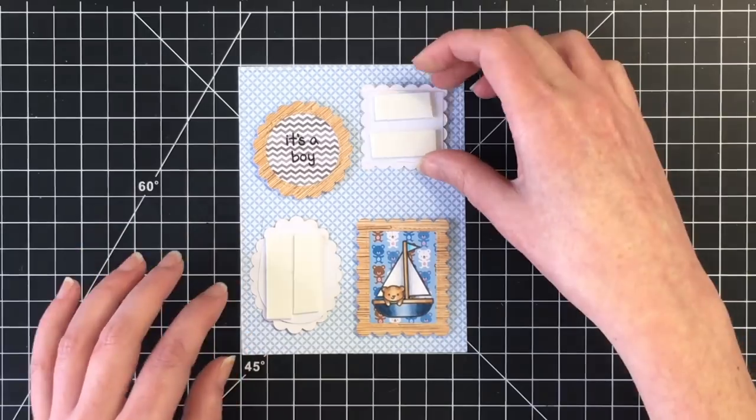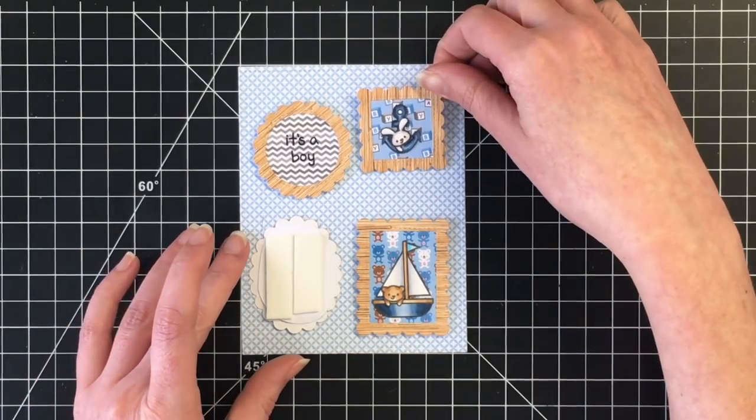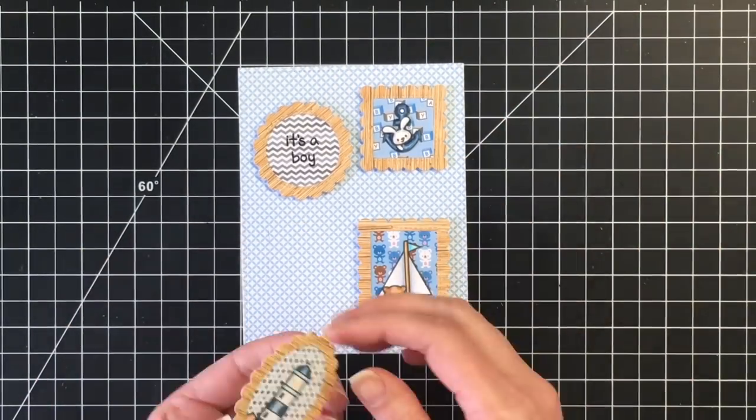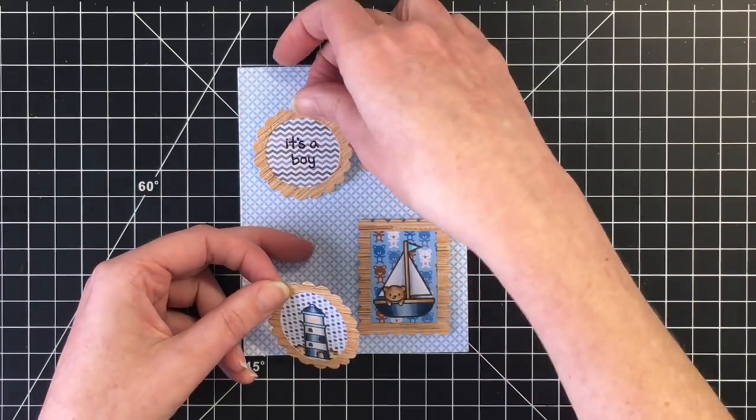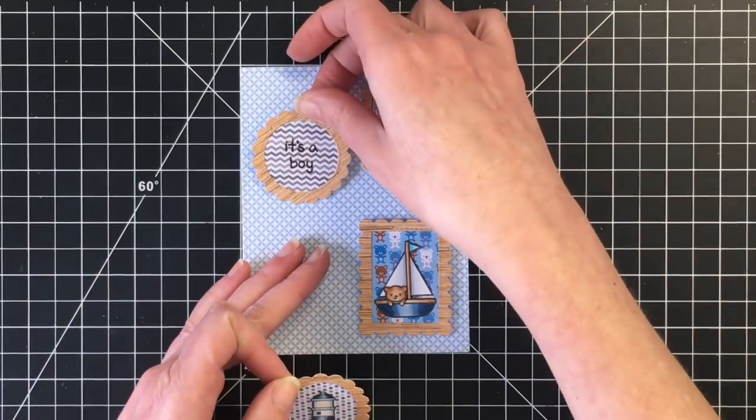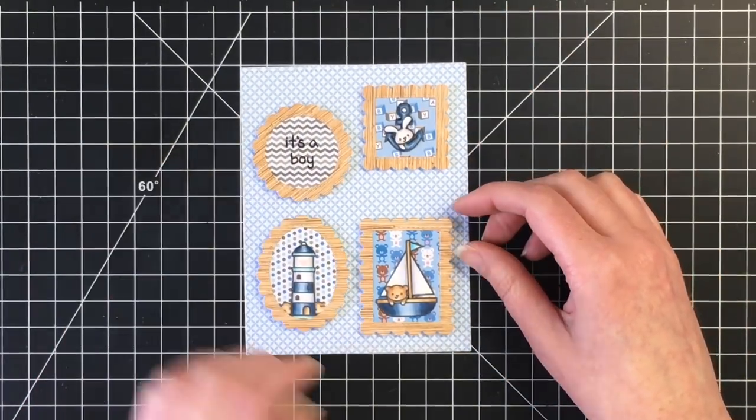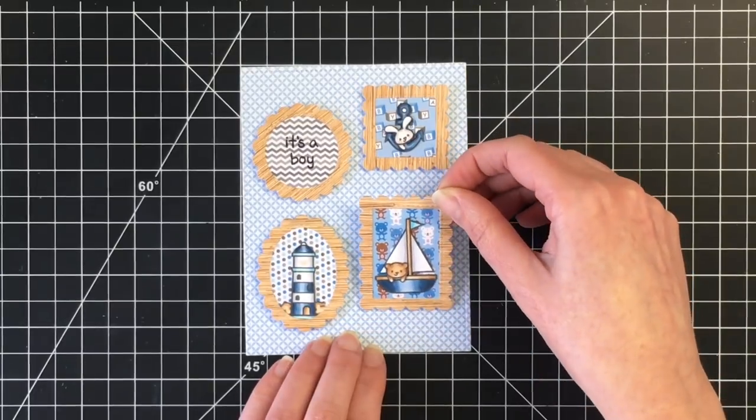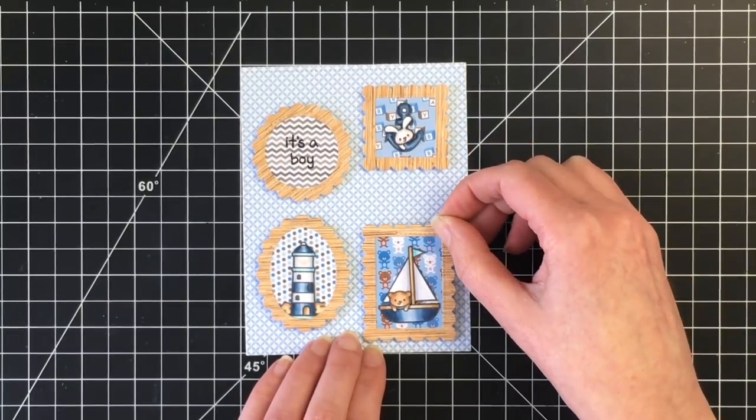So I'm just going to lay these out where I think I want them and I'm not pressing down at all so that I can move these around a little and get my placement. I do fiddle with this a little bit but eventually I kind of get it where I want it to be.